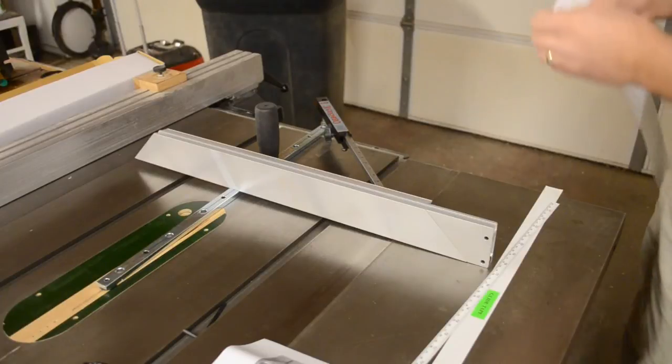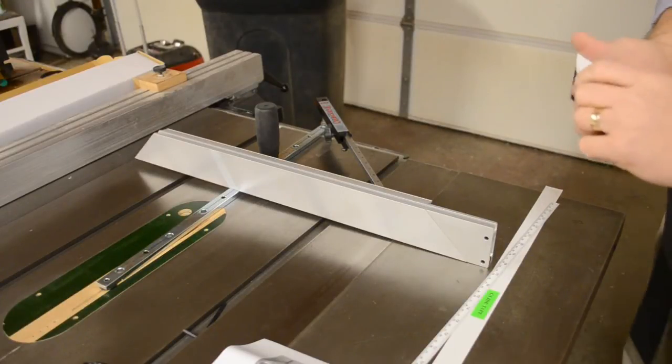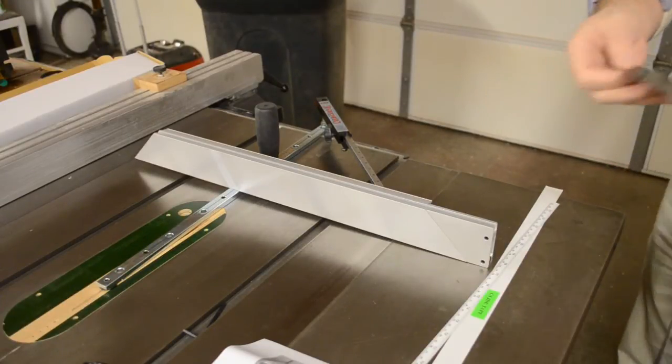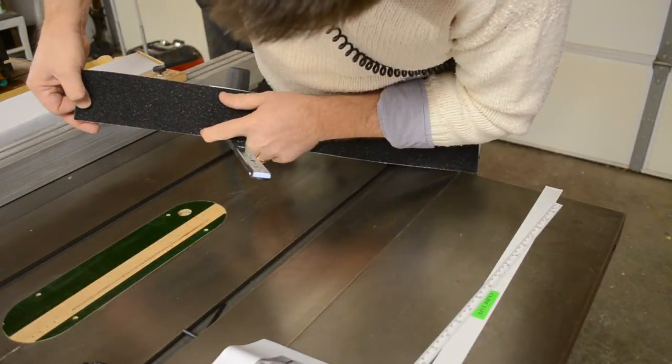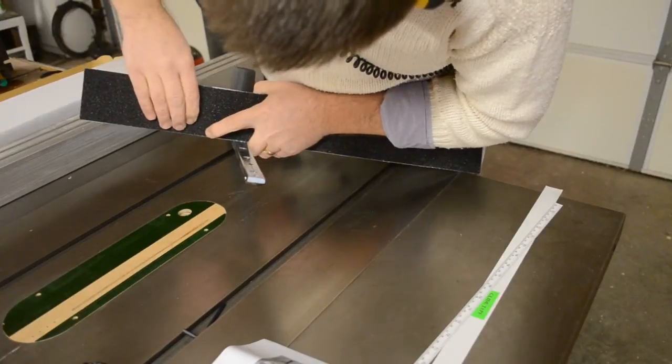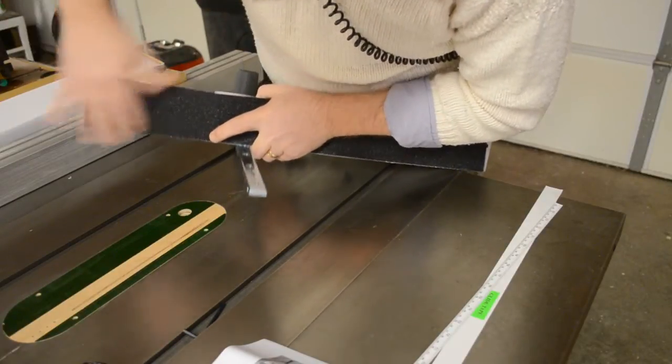Remove the paper backing from the abrasive and apply it to the smooth face of the fence. Leave about 1/16th of an inch at the bottom of the fence showing. If the abrasive is flush with the fence bottom, bits of aggregate can scratch the tabletop.